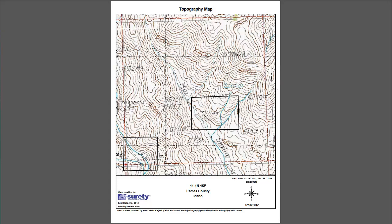Furthermore, a topography map can be applied in a multitude of scenarios. The use of the topography maps in Surety is to see the geography of the land for agricultural, real estate — which includes buying, selling, or investment opportunities — and for land conservation, just to name a few.